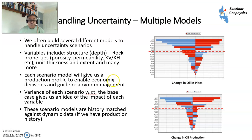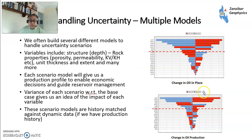How do you handle uncertainty? Multiple models. When I first started, you'd build several deterministic models with different rock properties — for example, permeability, KV/KH ratios (vertical versus horizontal permeability), extent — and you can switch faults on and off for quite complicated scenario modelling. You come up with a tornado chart showing change in oil-in-place and change in production. This lets you focus on what the key uncertainties are and direct your geological and engineering effort to understand and quantify the risks associated with them.